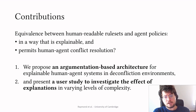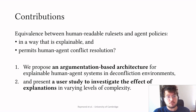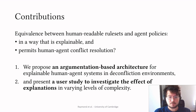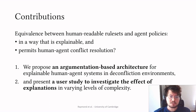The contributions we bring here relate to the question: can we find an equivalence between rule sets from human environments and agent policies in multi-agent or hybrid human-agent systems? With this work we present two contributions. The first is an argumentation-based architecture for explainable human-agent systems with disputed resources. We also present a user study to investigate how explanations affect human performance in systems with simple and complex rule sets.